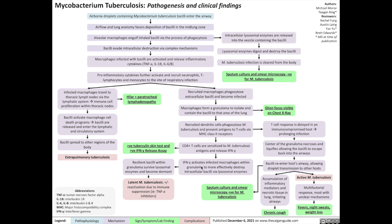The presented M. tuberculosis antigens sensitize CD4 T-cells, which then release interferon gamma. This results in a positive tuberculin skin test and positive interferon gamma release assay. Interferon gamma can activate infected macrophages within the granuloma to more effectively destroy the intracellular bacilli via lysosomal enzymes. However, resilient bacilli within the granuloma may survive and become dormant, resulting in latent M. tuberculosis infection, which can often become reactivated when the immune system is suppressed, such as with TNF-alpha inhibitor medications.